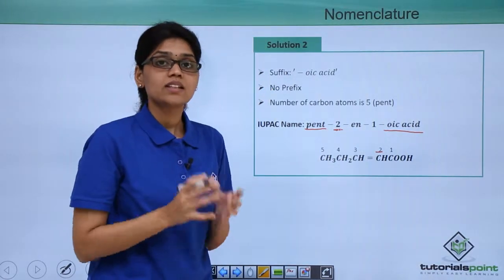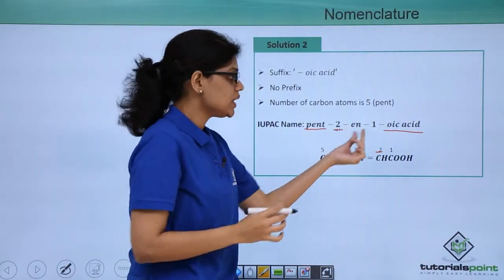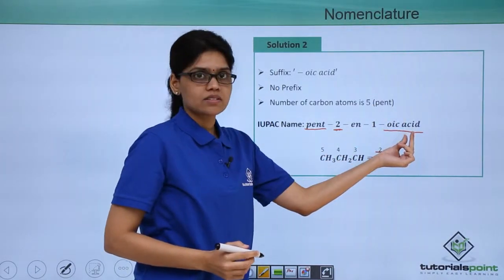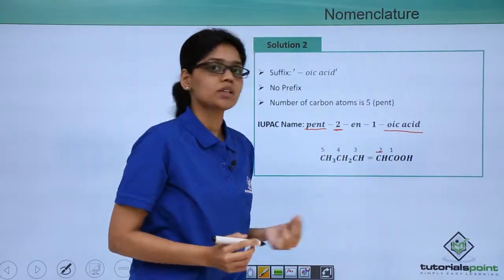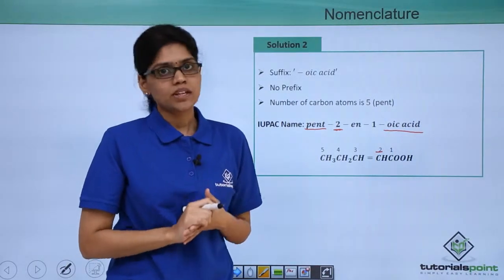Based on that, the name of this structure or the compound would be pent-2-ene, ene corresponding to the double bond, and 1-oic acid because 1 will be referring to the position of the principal functional group. I hope this is very clear. Thank you very much.